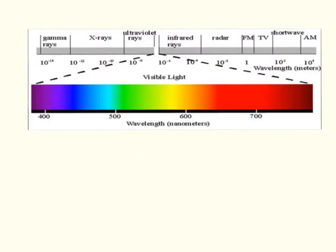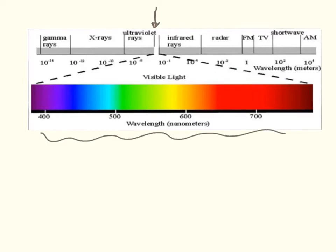You've probably seen this diagram before — it's the electromagnetic spectrum. These are a bunch of things that travel by waves. From all the way over on the right side, we have things like radio waves. In the middle, this little section right here, which is blown up, is where our visible light is.